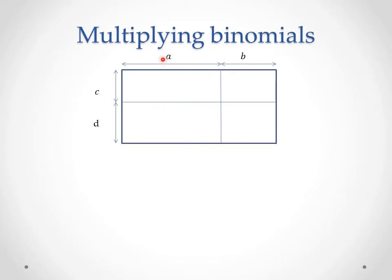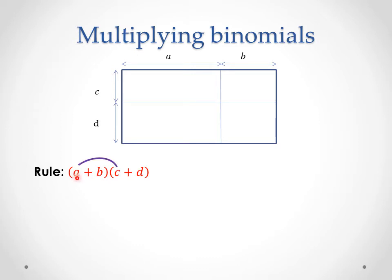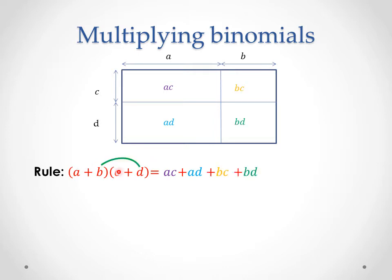Looking at our generic case, where we don't have numbers but we've got pronumerals or variables — this rectangle has a length of a plus b and a width of c plus d. So our rule: a plus b times c plus d, multiplying out these two binomials. We want to multiply everything in that first bracket by everything in the second bracket. So a times c gives us ac, a times d gives us ad, b times c is bc, and b times d is bd.